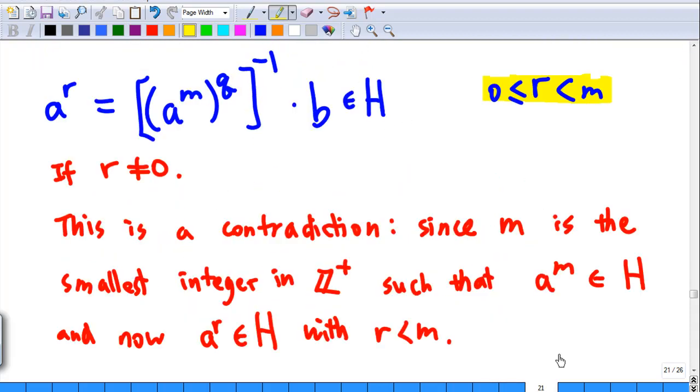Now, if r is not equal to zero, this will lead to a contradiction. Since m is the smallest positive integer such that a power m belongs to H, and now I have a power r belongs to H where r is less than m. Since when r is not equal to zero, this leads to a contradiction.